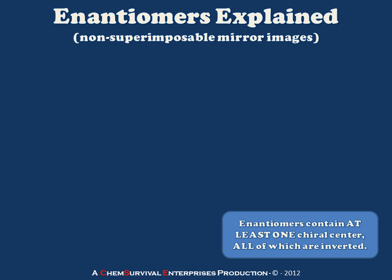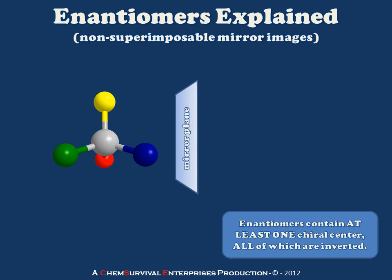Now let's take a closer look at the simple enantiomer shown in the previous slide: a gray central atom with tetrahedrally arranged substituents colored yellow, blue, green, and red. If I reflect this molecule through a mirror plane, I obtain the molecule on the right side of the screen. What may not be readily apparent is that these two molecules are not superimposable, so let's attempt to demonstrate that.